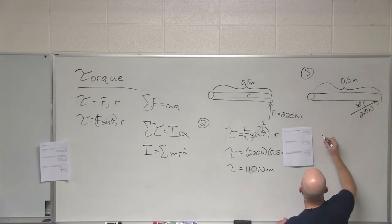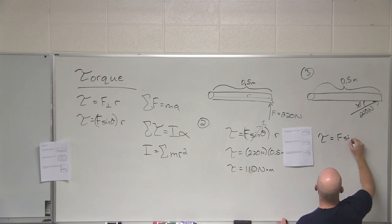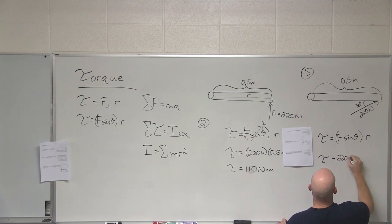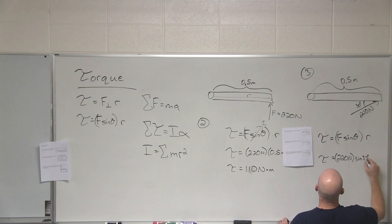Half. Yeah, because sine of 30 is a half. But sometimes they don't give you the angle of the force between the lever. Sometimes they give you the complementary angles. Sometimes you have to solve for the angle as well.